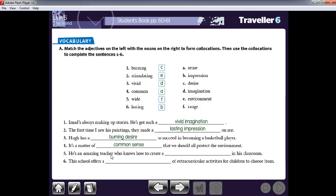Number five. He is an amazing teacher who knows how to create a stimulating environment in his classroom. So as a good teacher, he knows how to create a stimulating environment, a supporting and encouraging environment to his students. This school offers a wide range of extracurricular activities for children to choose from. So they offer great variety or wide range.